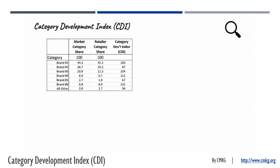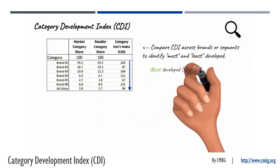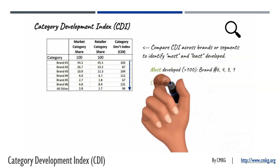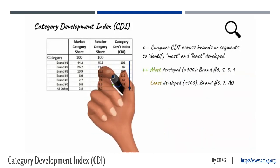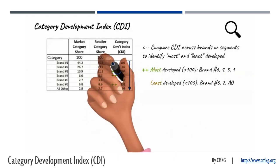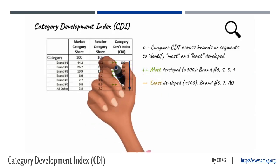The next consideration is how should you interpret these CDI numbers? Initially, you can compare them among brands or segments to pinpoint the most and least developed areas within the business. The most developed segments have an index over 100, surpassing the category shares for the total market, while the least developed have an index under 100, falling below the category shares for the total market.